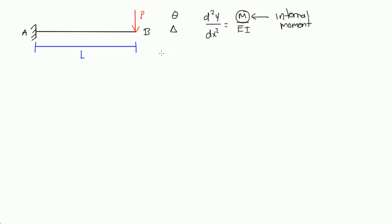The first thing we'd want to do is figure out the reactions here at A. We could figure out what the reactions are and cut the beam somewhere at a length x and look at the left side, or we can just cut it right away, not have to worry about the reactions at A, and only look at the right side of this span. So let's actually do that.